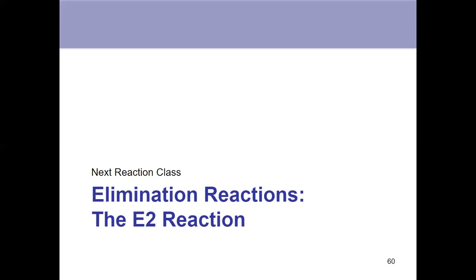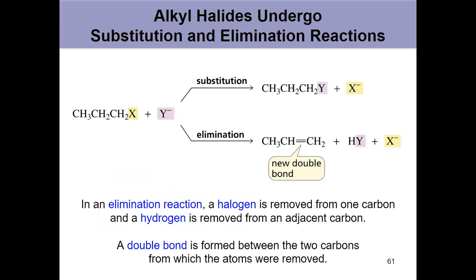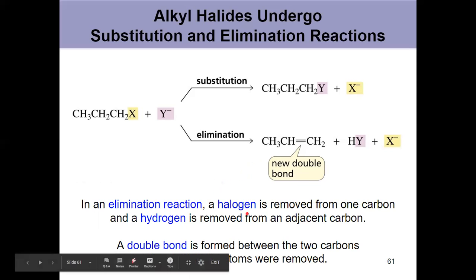With an elimination reaction, we are eliminating groups from the molecule — they're getting removed. Previously we saw substitutions, where something got replaced. Now with an elimination, we've lost the leaving group and we've lost a neighboring hydrogen. In doing so, we form a new double bond. The product of an elimination reaction is an alkene. Right now in chapter nine, we're just dealing with halogens as the leaving group.